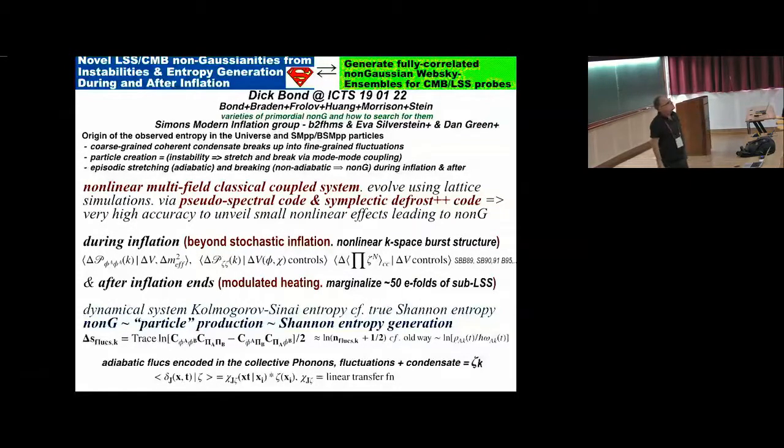The methodology that we're using, apart from analytics and semi-analytics, is a non-linear multifield classical coupled system, and we evolve using lattice simulations. For some of the things, we have to have arbitrary accuracy. One is a sort of more conventional lattice or grid-based approach. The other one goes back and forth in the pseudo-spectral aspect, with a certain amount of wave number information coming in. This gives us very high accuracy.